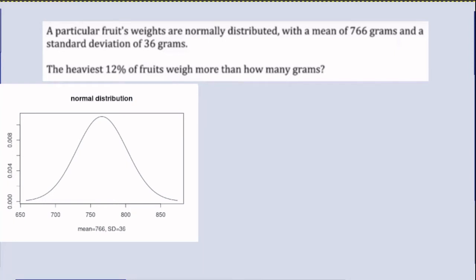Here's another video involving a normal probability distribution. In this case, the mean is 766 and the standard deviation is 36.